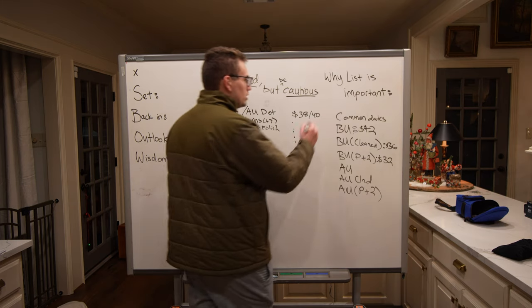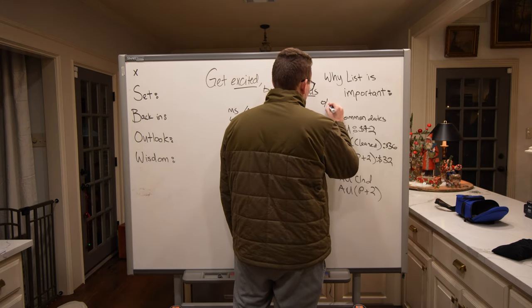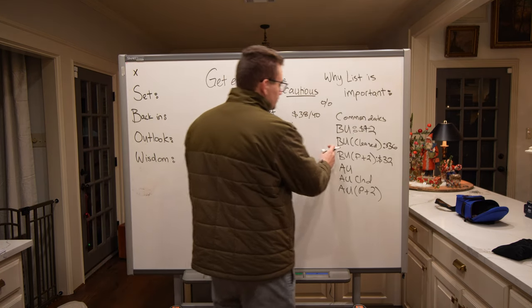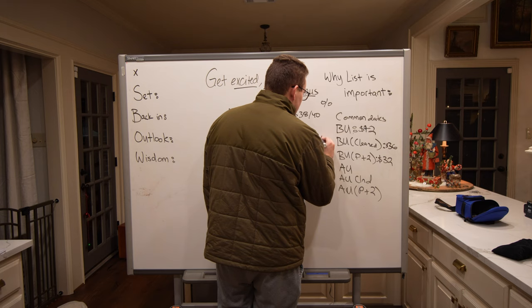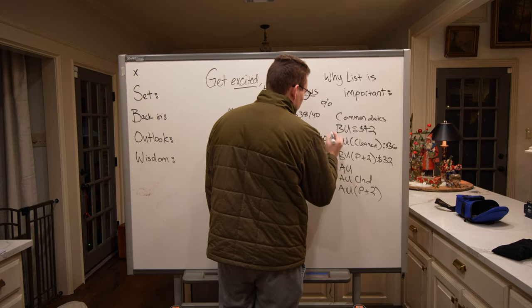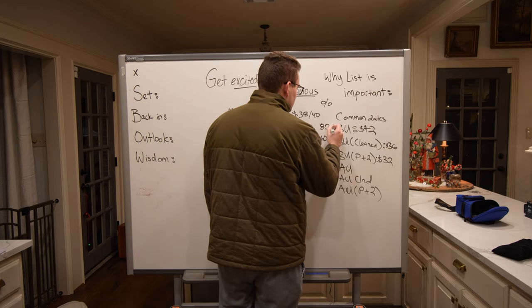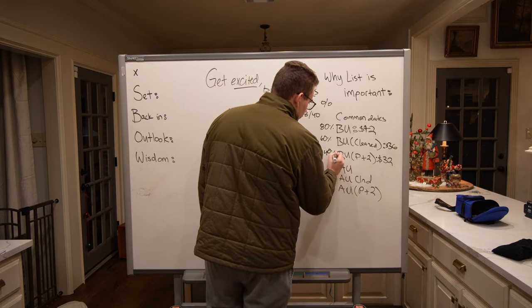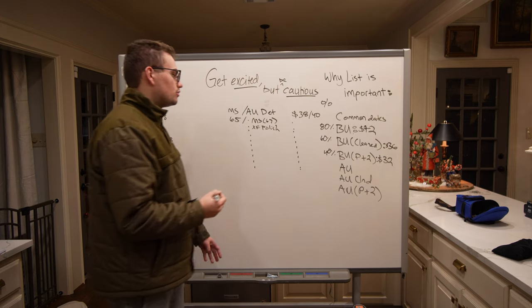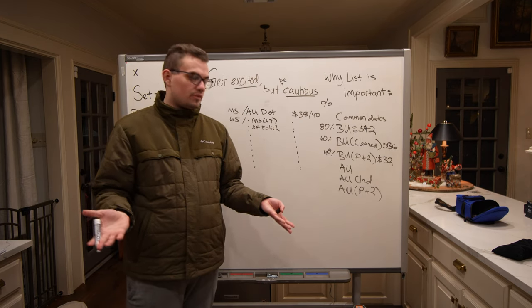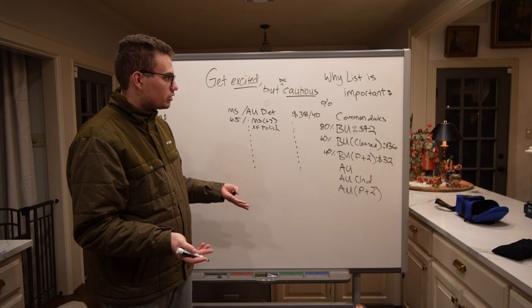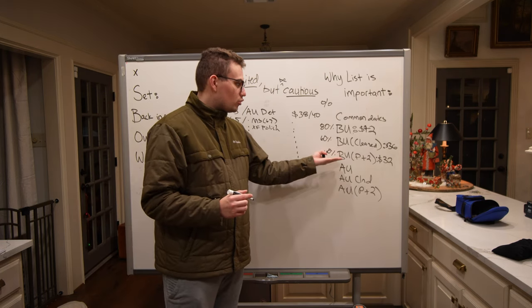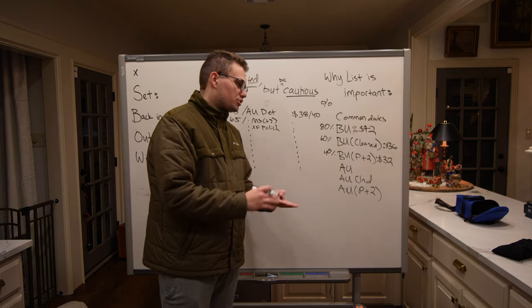And someone might say, man, that's a ripoff, you know, you should give someone more money. But the question is, like, okay, if someone with a BU Morgan dollar that has rim bumps, has polishing, has scratches, are you looking at a coin that's saying, man, this is superb, every customer wants this coin, it's in high demand? No, it's honestly junk. It's honestly stuff that's not the best in terms of collector greater value. And so, you know, when you're looking at a lot of coins that may have issues, don't beat yourself up that you're not paying too much.